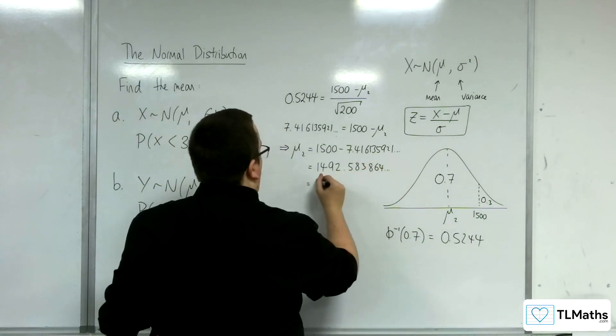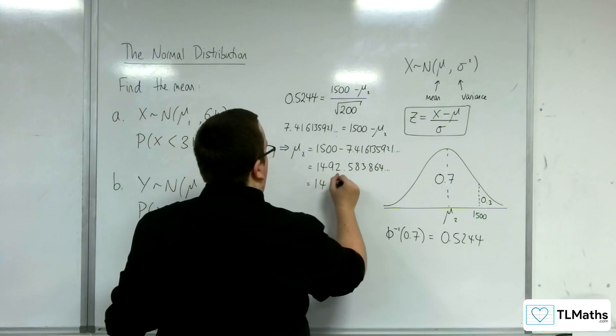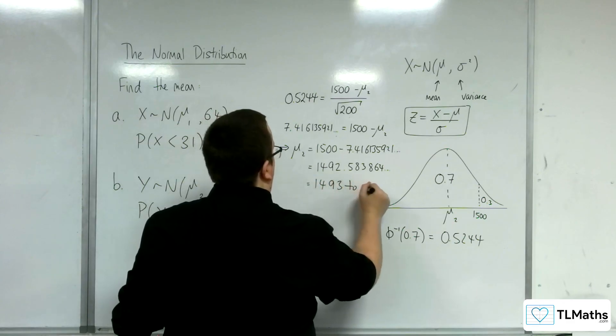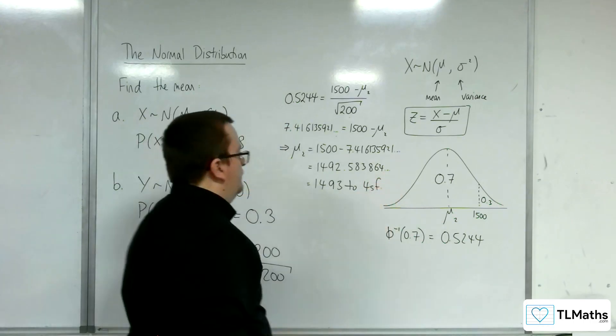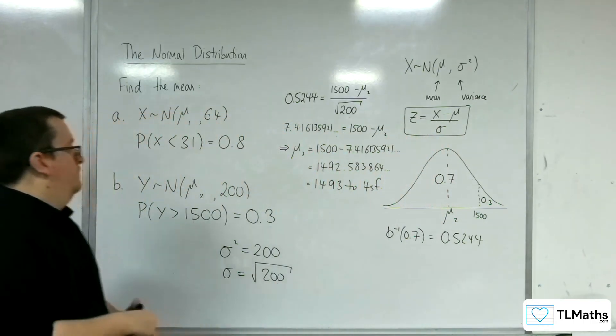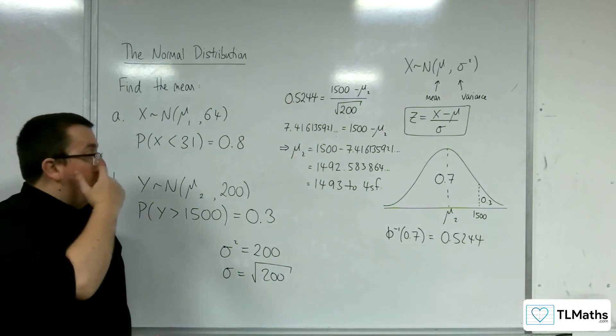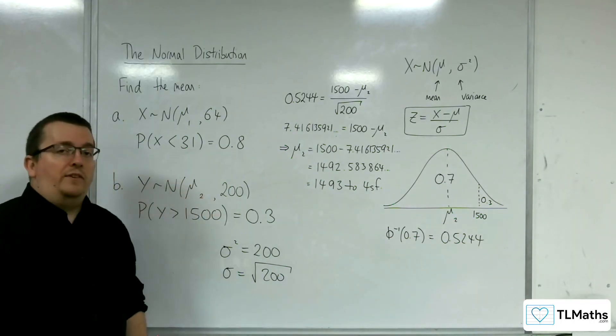So about 1,493 to 4 significant figures. And so that's how we can find the missing mean in these cases.